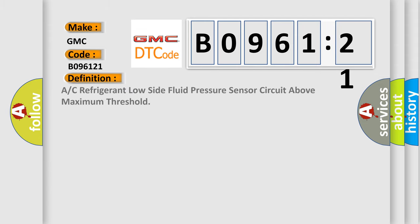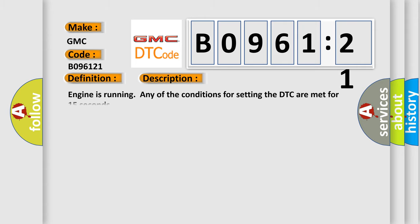The basic definition is A/C refrigerant low side fluid pressure sensor circuit above maximum threshold. And now this is a short description of this DTC code.